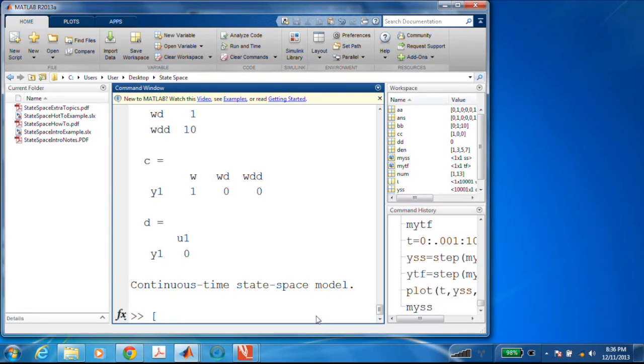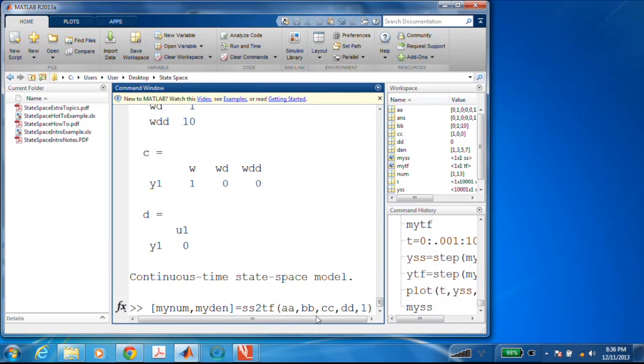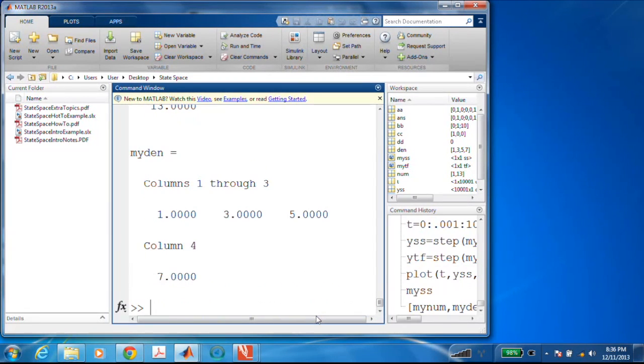So let's do that. I'm going to create my num and my den is equal to SS to TF, A, A, B, B, C, C, D, D. And I have to give it an argument, an integer argument at the end that tells MATLAB which input I wanted to find transfer functions with respect to. Now, because this system has just one input, P or U, when I tell it one, it's just going to give me one transfer function. And there it is.